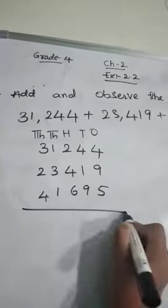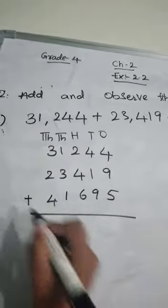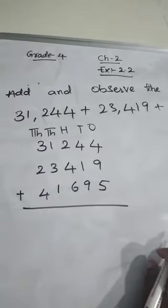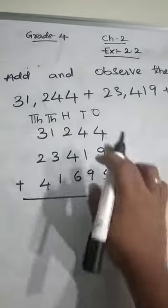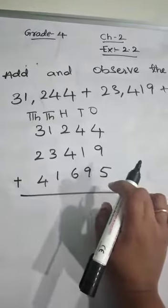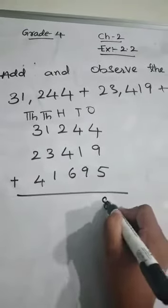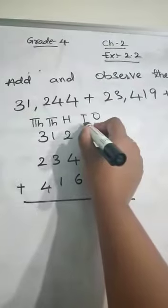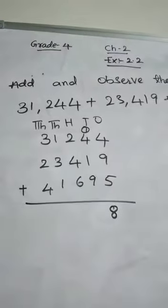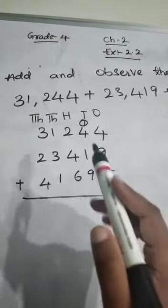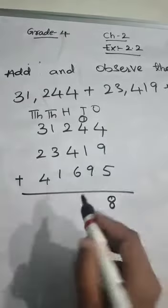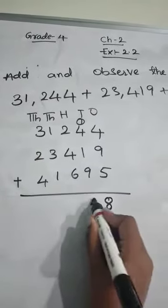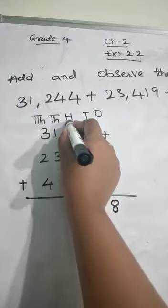Now what we have to do? Now we have to add this numbers. So 4 plus 9, 4 plus 9 is 13. So 13 plus 5, 13 plus 5 is 18. So 8 here, 1 carry here. 9 plus 1, 10. 10 plus 4, 14. 14 plus 1, 15. So 5, 1 carry here.